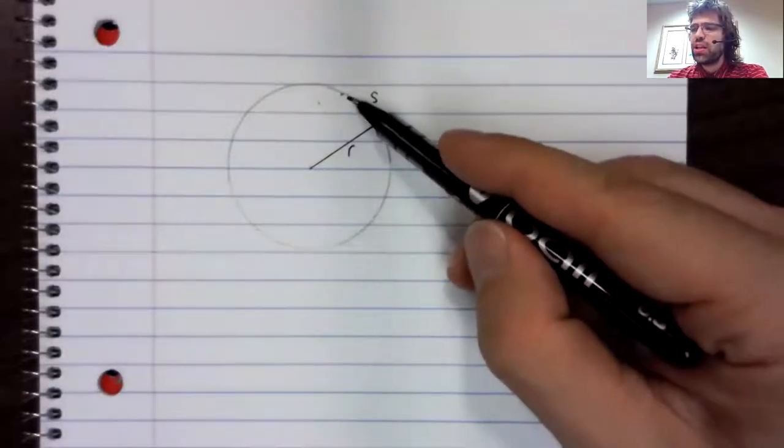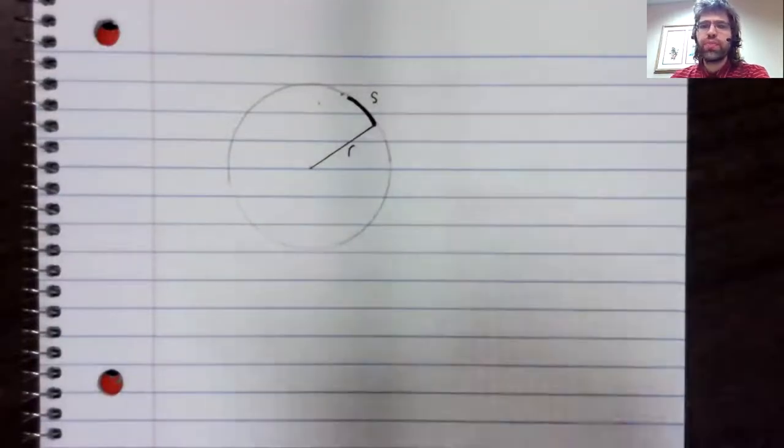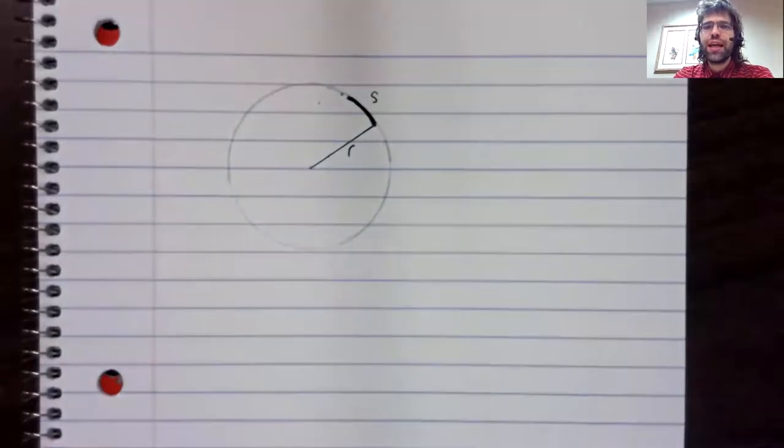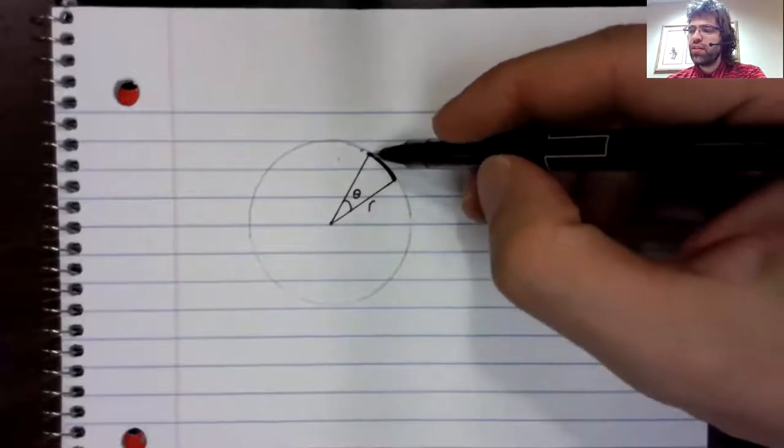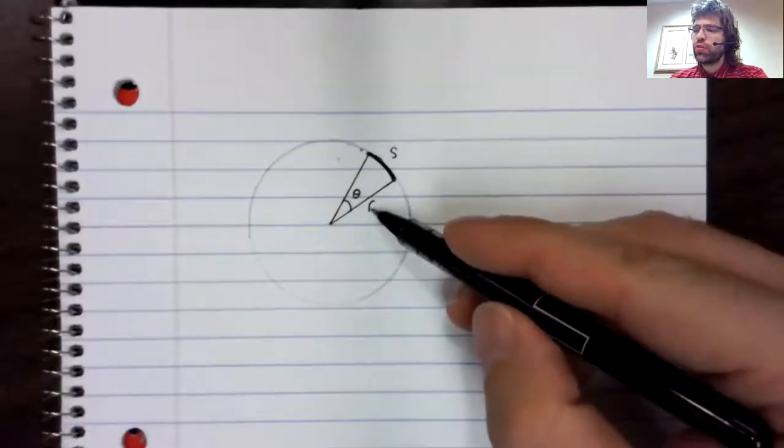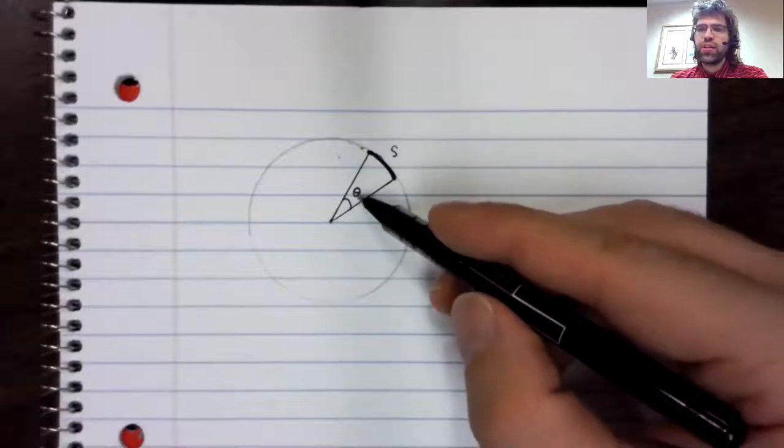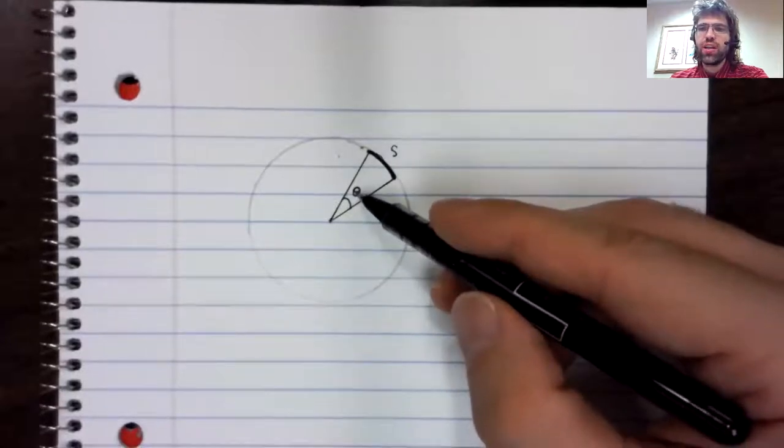Well, we've already seen that arcs are related to angles. And our goal is to find a formula that relates the length of this arc, the radius of the circle, and this angle theta.